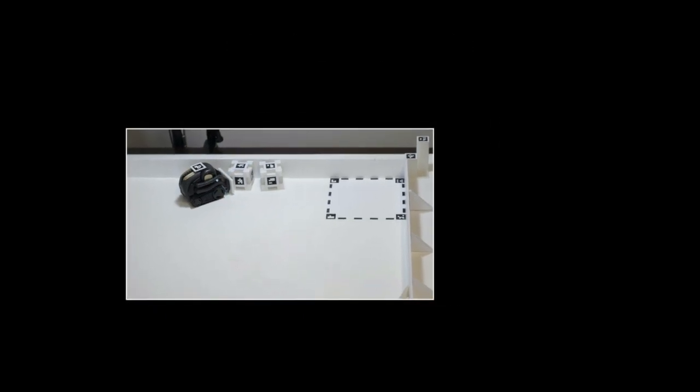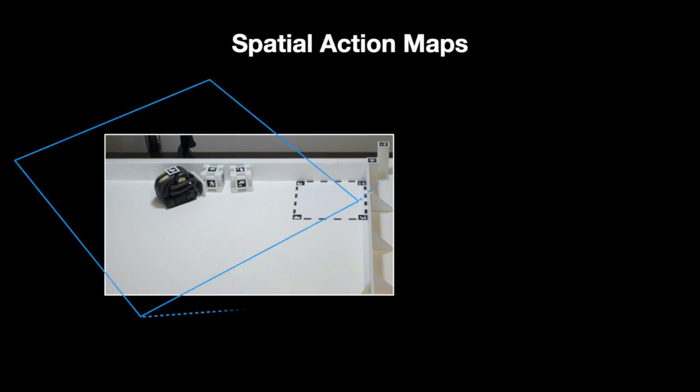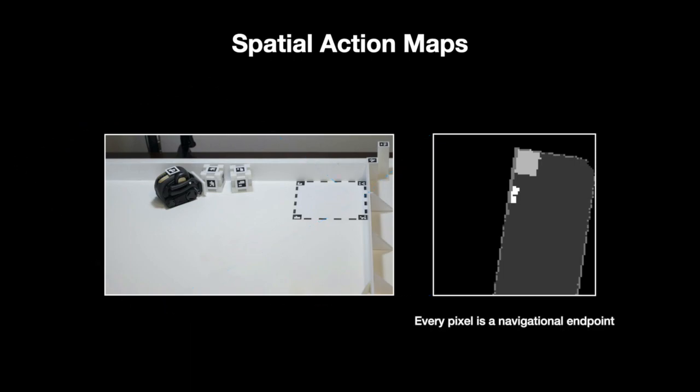In this work, we present a new action representation for mobile manipulation, which we call spatial action maps. The main idea is that we can represent a set of possible actions using a pixel map, where every pixel is a navigational endpoint at the corresponding scene location.